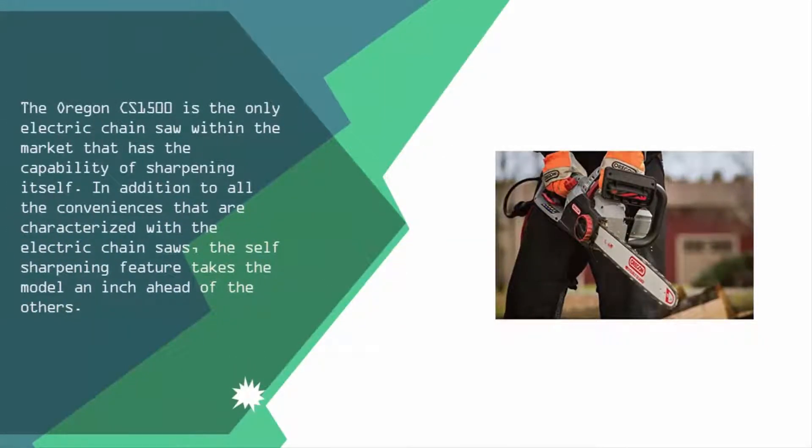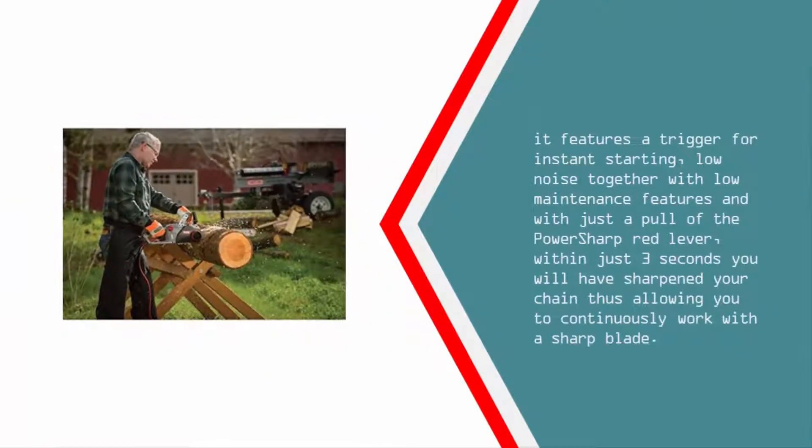has the capability of sharpening itself. In addition to all the conveniences that are characterized with electric chainsaws, the self-sharpening feature takes the model an inch ahead of the others. It features a trigger for instant starting, low noise,